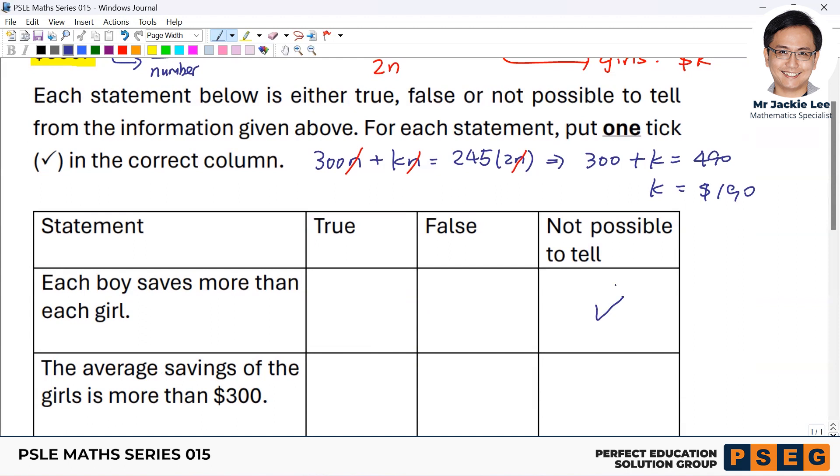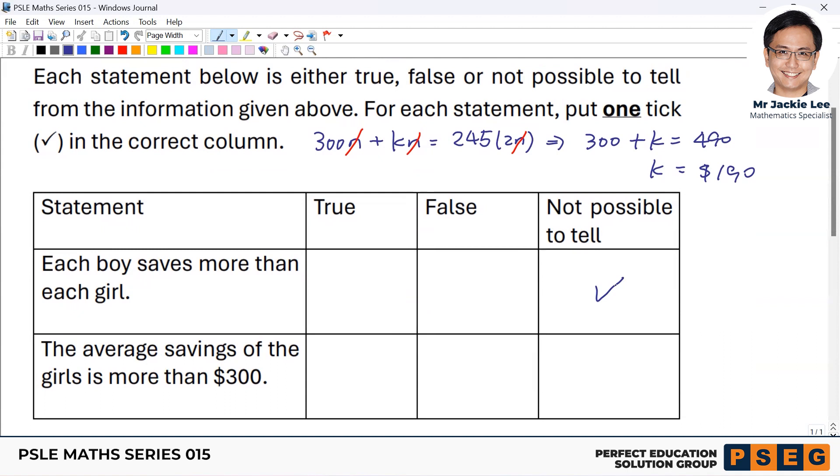Second, the average saving for the girls is more than $300. Now obviously the answer is calculated is only 190, right? So then for $200, more than $200, this statement confirmed to be incorrect, false statement.